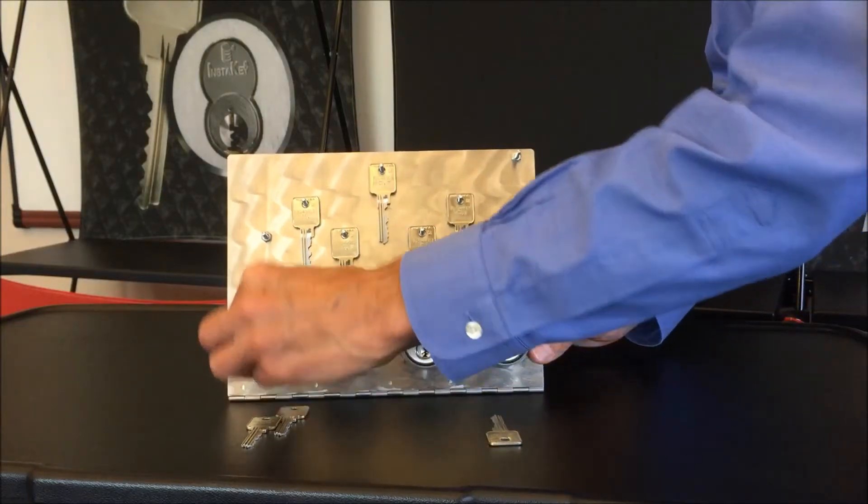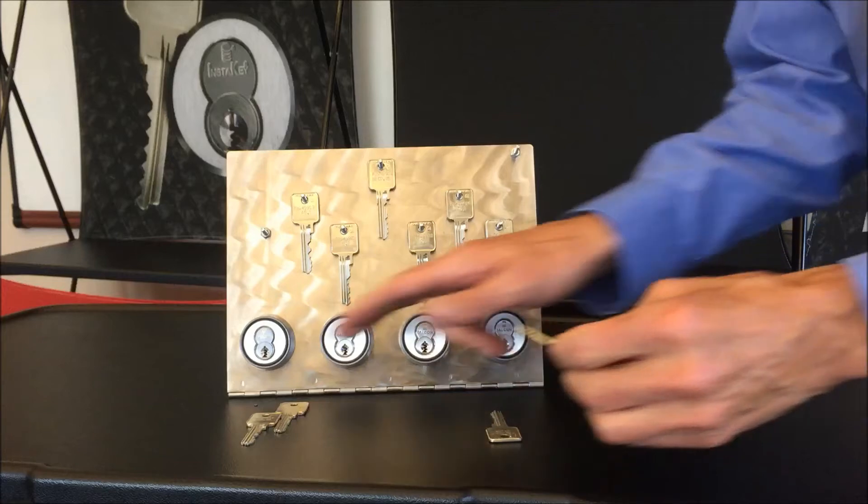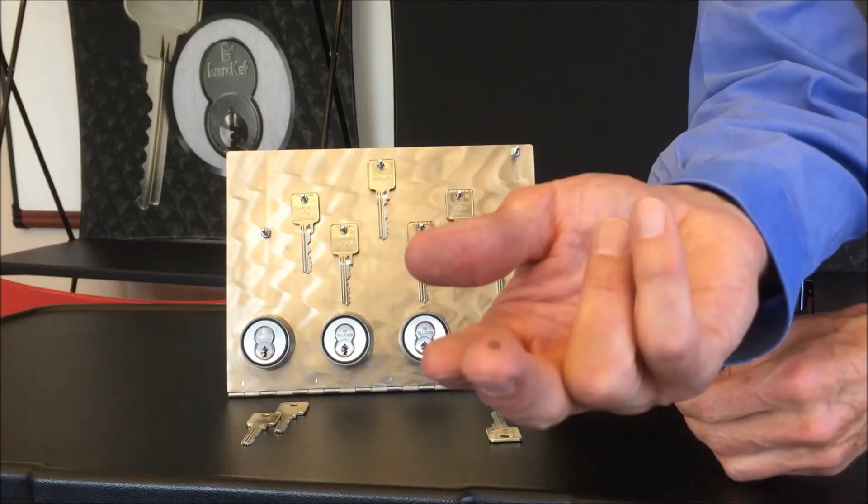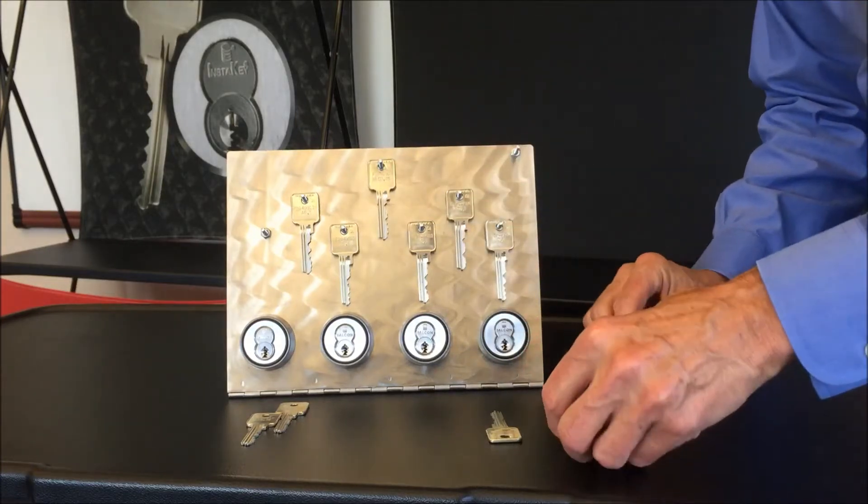That key is inserted into the lock in the door, turned 180 degrees. When it is removed, a small wafer will fall out of the cylinder, thereby re-pinning the cylinder at the door-specific level.